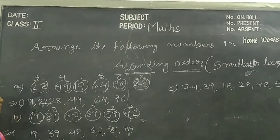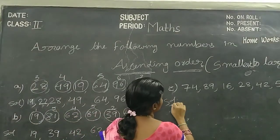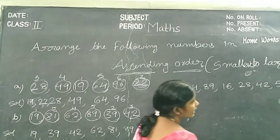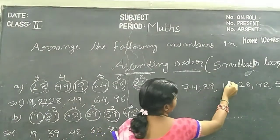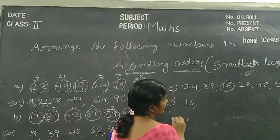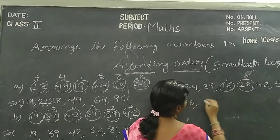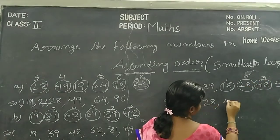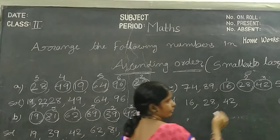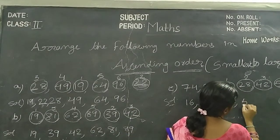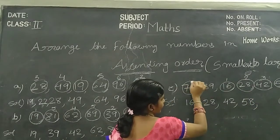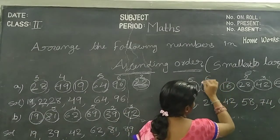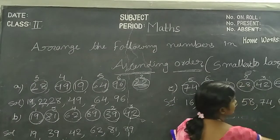Another example: 74, 89, 16, 28, 42, 58. In this example, what is the smallest number, children? Sixteen. Next number is 28. Next number is 42. Next number is 58. Next number is 74. Next number is 84. Next number is 89.